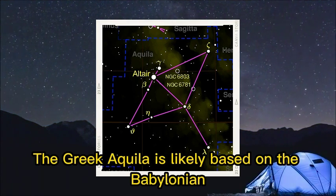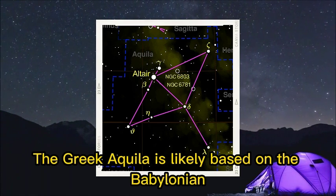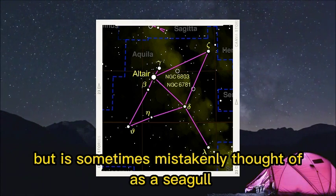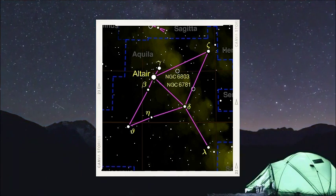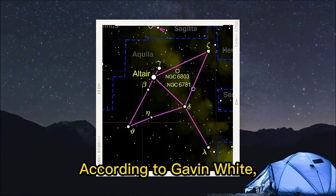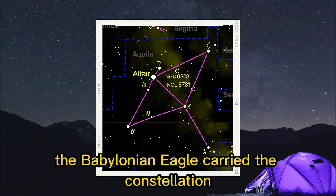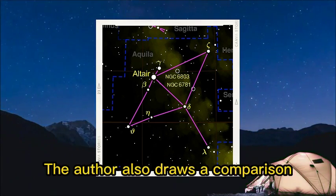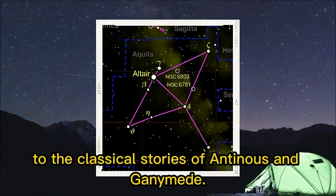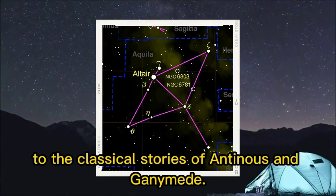The Greek Aquila is likely based on the Babylonian constellation of the eagle but is sometimes mistakenly thought of as a seagull located in the same area as the Greek constellation. According to Gavin White, the Babylonian eagle carried the constellation known as the Dead Man in its talons. The author also draws a comparison to the classical stories of Antinus and Ganymede.